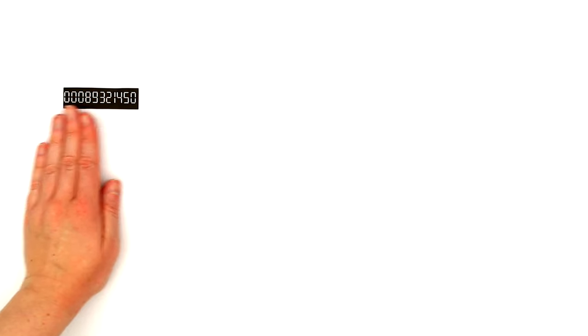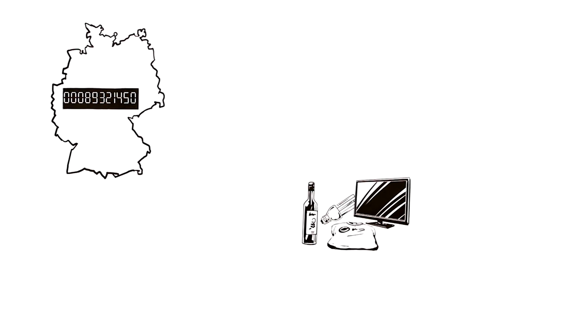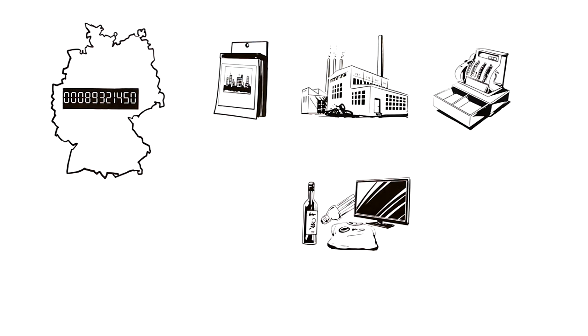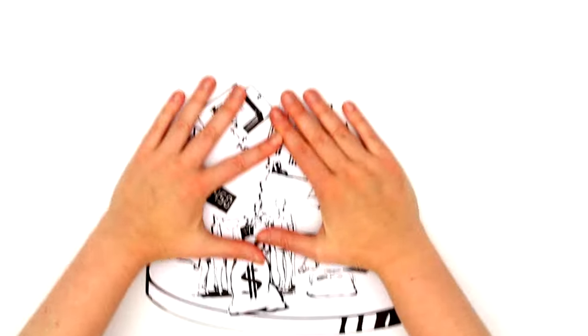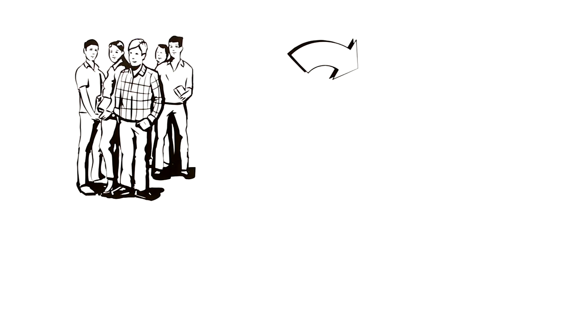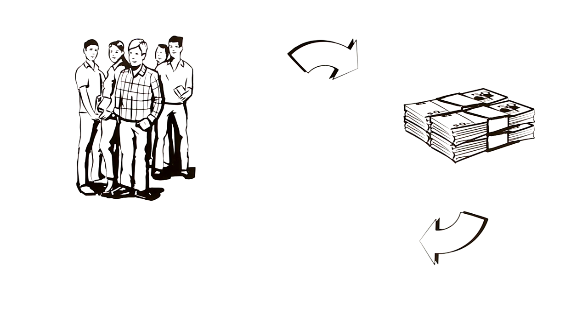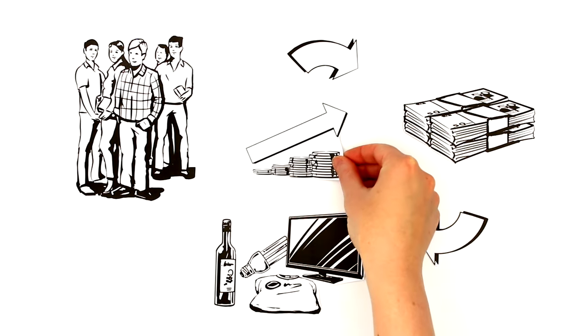The value of all the products manufactured and sold in a country over the course of one year, along with everything that people do and get paid for, amounts to the gross domestic product. When people earn more money and then buy more products and services, the economy grows.